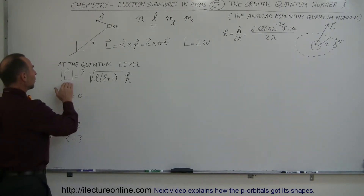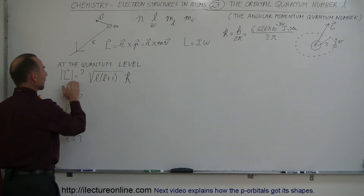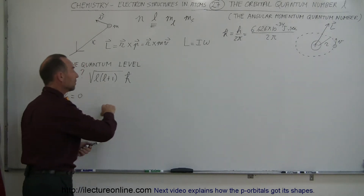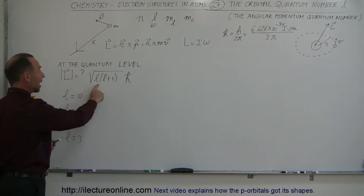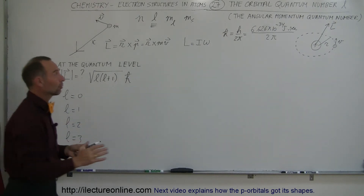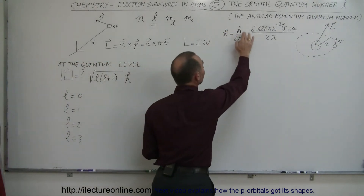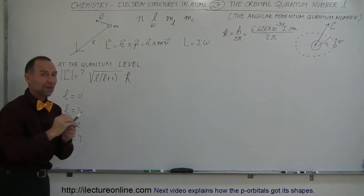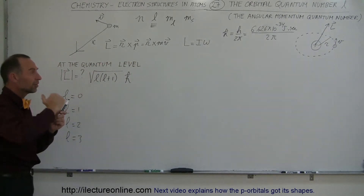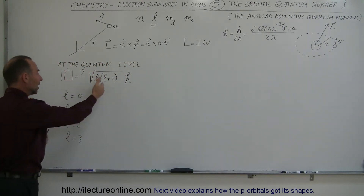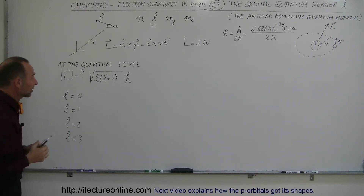The angular momentum an electron can have is only equal to the square root of L times (L plus 1), times H-bar. H-bar is H divided by 2π, and H is Planck's constant, which defines the incremental increase in energy — and in this case, angular momentum — that a small object like an electron can have.